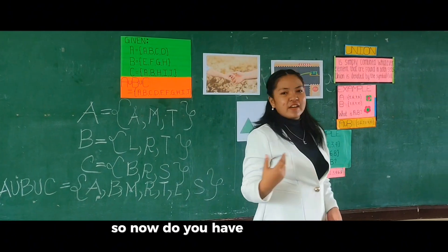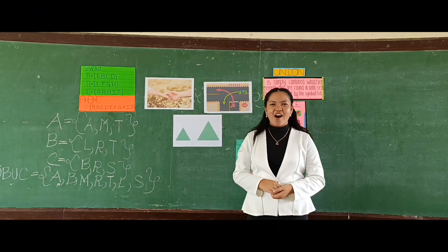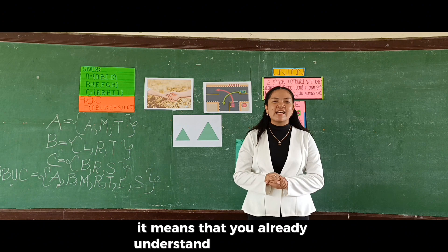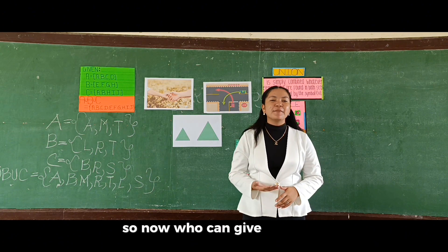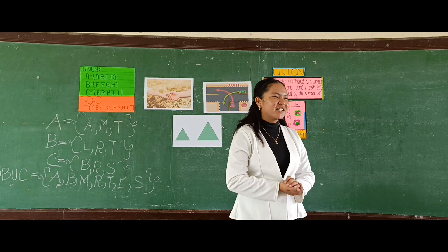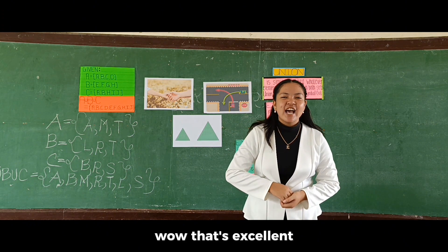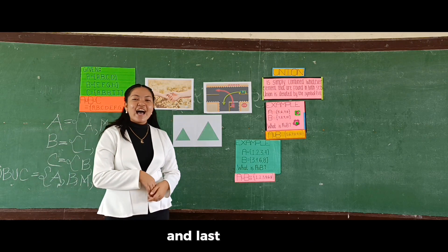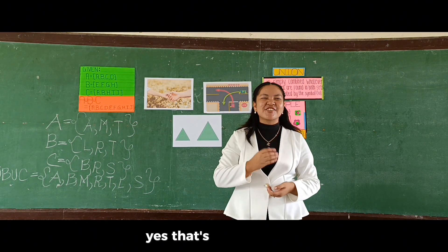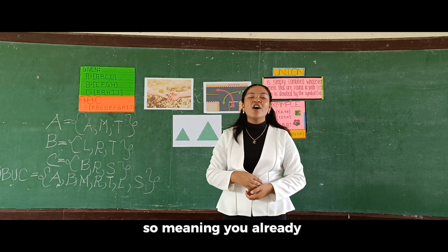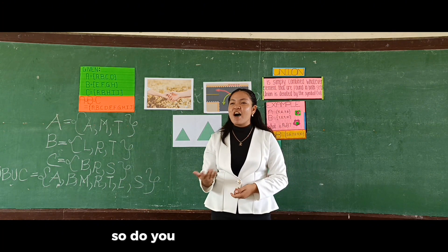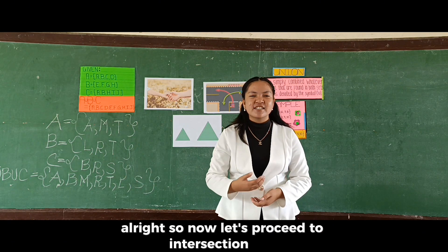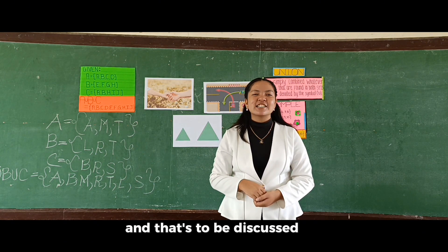So now, do you have any questions, class, about union sets? Alright. Since you don't have any further questions, it means that you already understand the lesson well. Now, who can give me their own example? Yes, Justin. Wow, that's excellent. Another example. Yes, Kyle. Wow, that's good. And last example — yes, that's correct, Carl. So meaning you already understand the topic. Now let's proceed to intersection sets, and that's to be discussed by Teacher Jera.